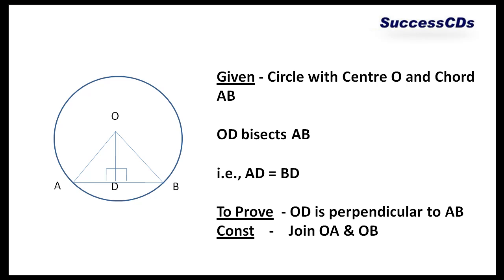Now, here we are given a circle with center O and chord AB. OD bisects AB. That means D is the midpoint of AB, which is AD equals BD. Now, we have to prove that OD is perpendicular to AB.